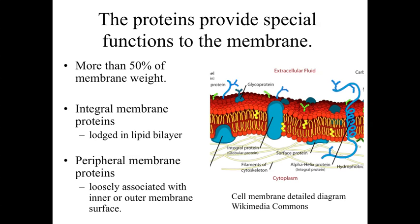Proteins are the second component associated with the plasma membrane. Proteins are going to be about 50% of the membrane weight, and they're important because they provide specific functions associated with the membrane. We can have integral membrane proteins, which are embedded either within half of the phospholipid bilayer or all the way through the membrane, extending from the cytoplasmic side to the extracellular side. There are also peripheral membrane proteins — surface proteins loosely associated with either the inner or outer membrane — and their presence contributes to the specialized functions of the membrane.